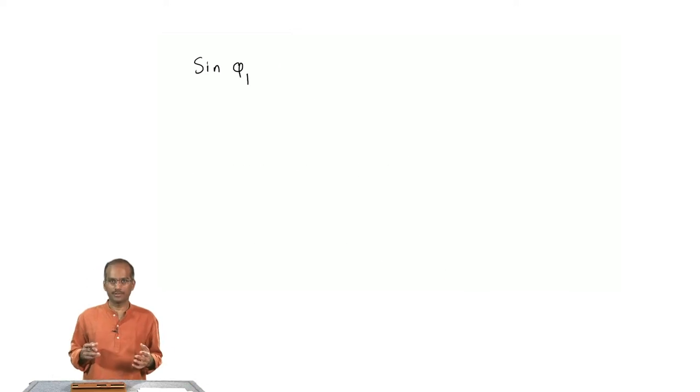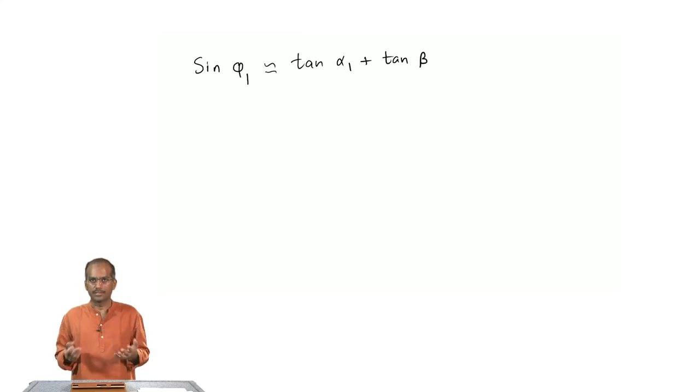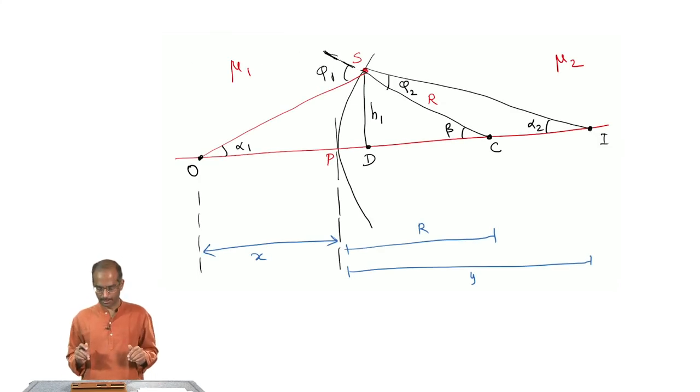Remind yourself that we are looking at an approximation where all these angles are very small, in which case sin phi 1 can be approximately written as tan alpha 1 plus tan beta. Just expand sin a plus b and consistently apply that all the angles are small enough, and then every time you have a sin of theta you can replace it by tan of theta. Remember that we are working in small angle approximation in which case this distance P d is so small that we can ignore the distance and take distance Od to be x itself. Taking P d small would correspond to thin lens approximation. P and d are so close that we can ignore that small difference and take the distance between P and C to be R itself.